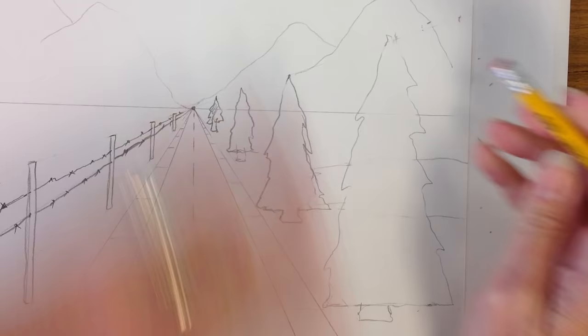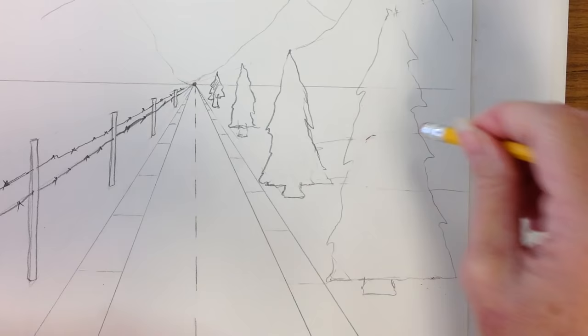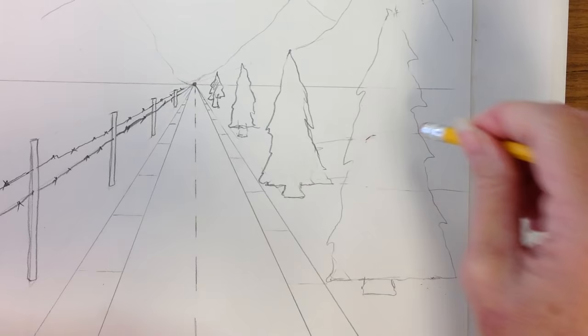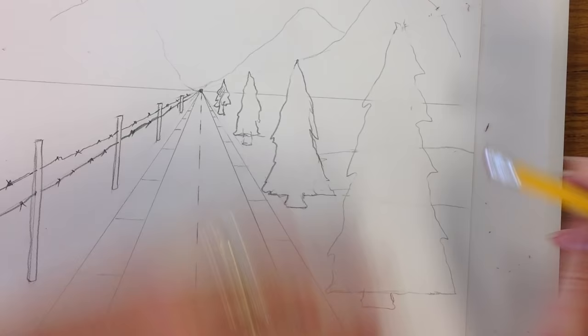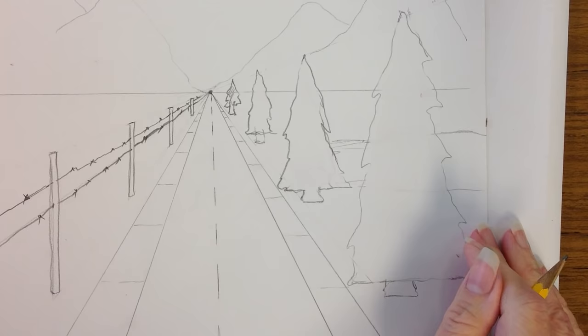So remember I said in the beginning you're going to be erasing a lot. There's lines that you need in the beginning for guide lines. You don't need them later on. And if something faint is left, when I color it in, that will fade away.